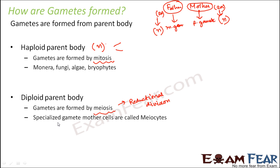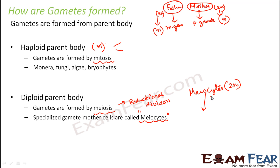The specialized gamete mother cells are called meiocytes. These are the cells that undergo meiosis to produce the gametes. The term is derived from the word meiosis. These meiocytes are specialized diploid cells that undergo meiosis to produce haploid gametes, so the chromosome number gets halved.